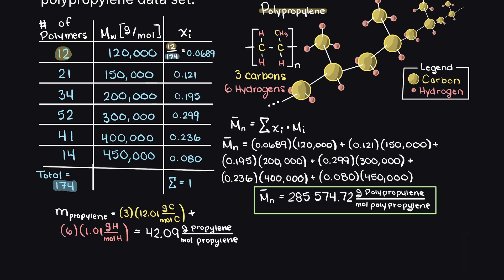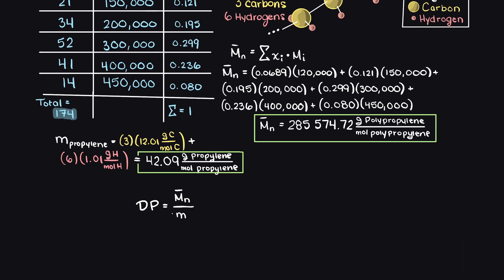Lastly, we just need to divide the number average molecular weight of our polymer dataset by our monomer weight, and we find that the degree of polymerization for this sample dataset of polypropylene is 6,786.47 monomers long. I hope that this video helped your understanding of how to find the degree of polymerization of a polymer.